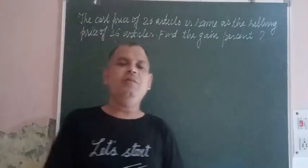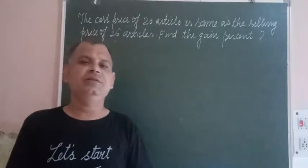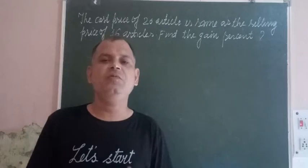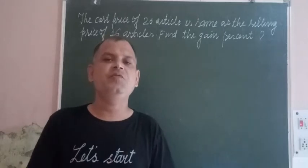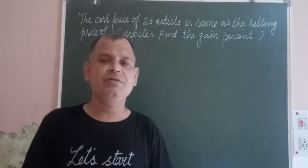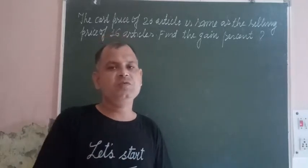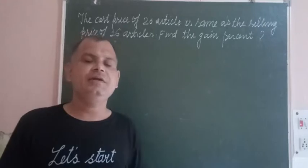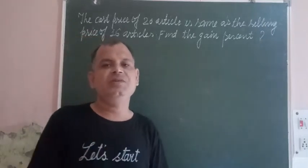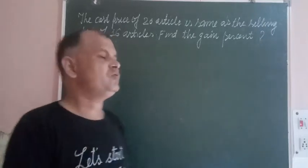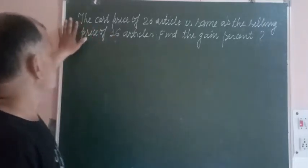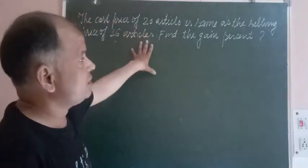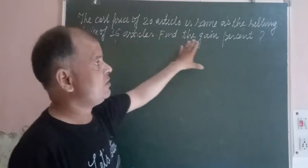Hello students, welcome to this class. In this class we solve a problem related to profit and loss, and also involving cost price and selling price. The question is: the cost price of 20 articles is the same as the selling price of 16 articles. Find the gain percent.